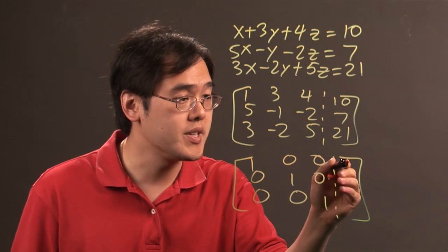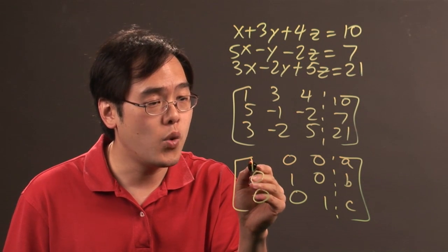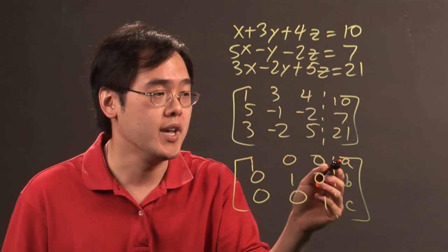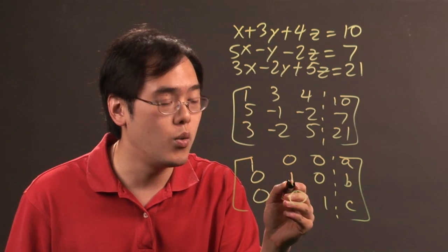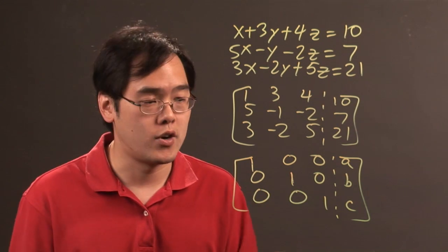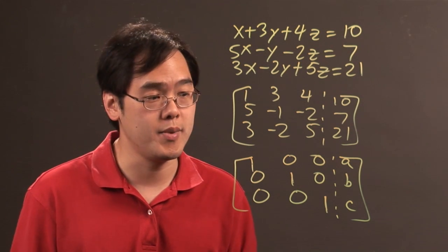Now I'm just going to call this a, b, and c as a generic fashion because what this indicates here is this one indicates what the x solution will be, the middle one will be the indicator for what the y solution is going to be, and then the one over here indicates what the z solution is going to be.